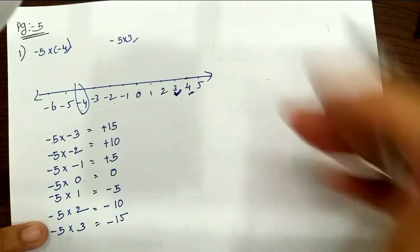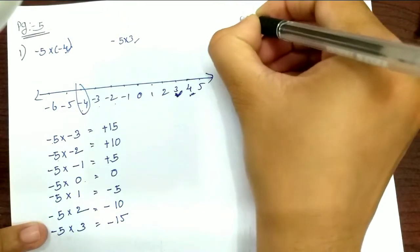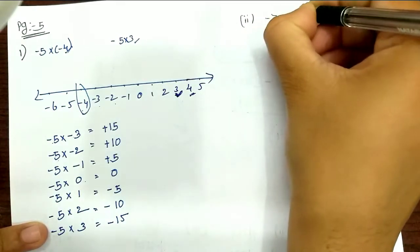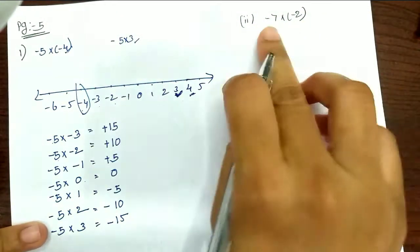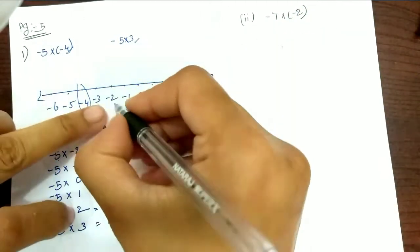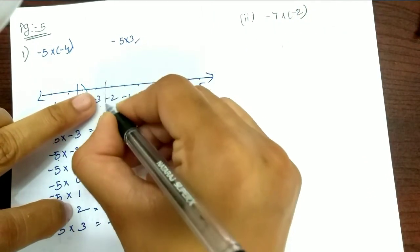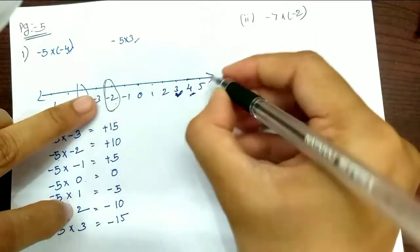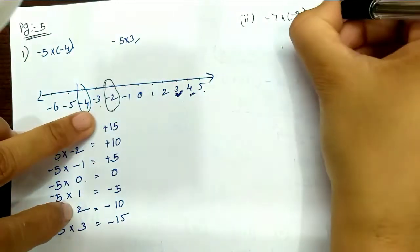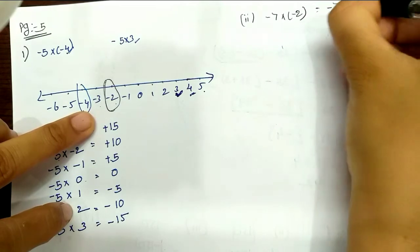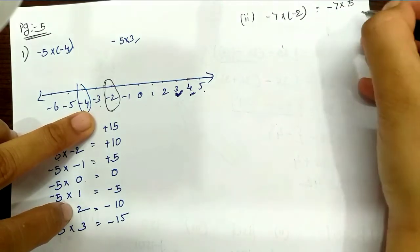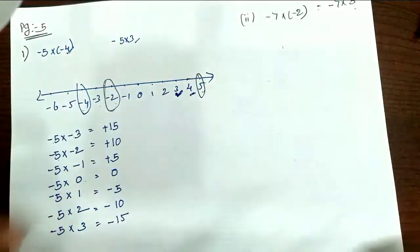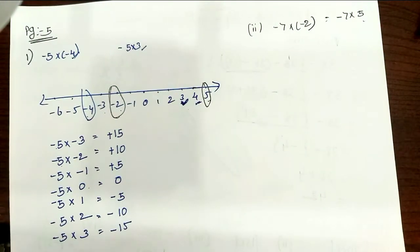Next is the second: minus 7 into minus 2. So here we start. I will show you the number line. This is minus 2. Minus 7 into 5, so plus 5. This is plus 5. I will show you the number line.